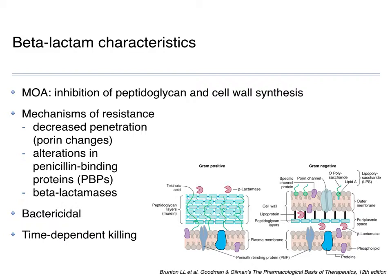All things being equal, you'd rather use a bactericidal drug than a static drug. We'll talk about examples where you might have a choice of therapy and the cidal drug becomes preferred. These are also time-dependent killers — there are two major types of bacterial killing: time-dependent and concentration-dependent. Beta-lactams depend on the amount of time that concentrations are in your body and above the MIC — the minimum inhibitory concentration — which is how we measure antibiotic activity. We'll talk more about interpreting MICs next week. These really depend on time in the body, not so much on the dose.